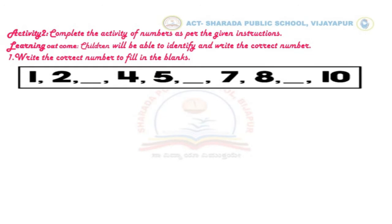Here, number 1, 2 — the next is blank. You have to write number 3 here. Similarly, you have to write correct numbers to fill in the remaining two blanks.